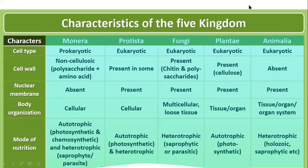Let's study the characteristics of the five-kingdom classification in detail. First is cell type — prokaryotic or eukaryotic. Only Monera has a prokaryotic cell; Protista, Fungi, Plantae, and Animalia all have eukaryotic cells. Cell wall is totally absent only in Animalia. In Protista, cell wall may be present or not present. Nuclear membrane is absent only in prokaryotic Monera — it is present in all others.